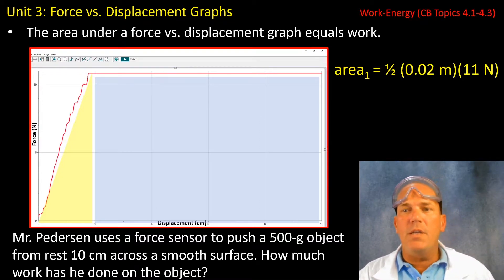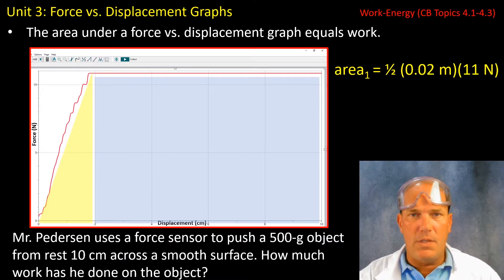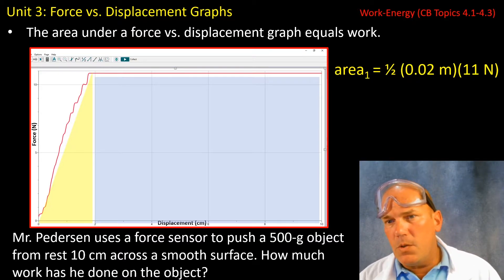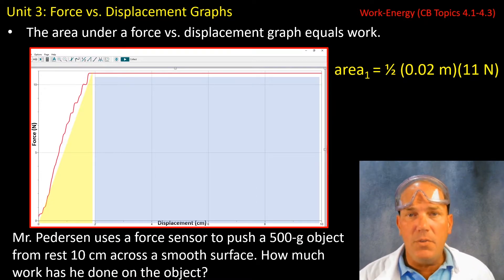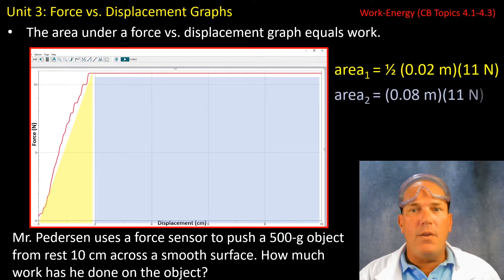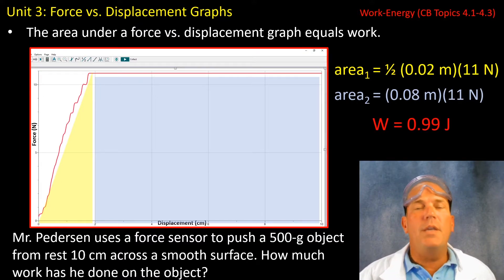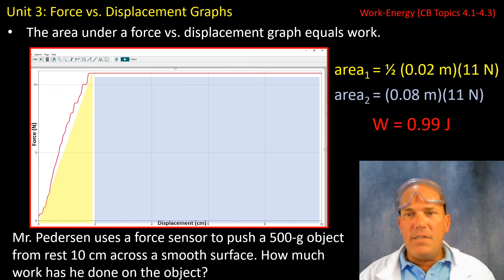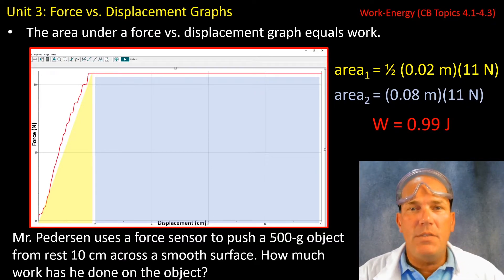So our first area we can approximate using the one half base times height to be one half 0.02 meters. Now I converted centimeters into meters. So I was in the base SI units and about 11 newtons of force. For the remaining area, the rectangle, we have 0.08 meters again multiplied by 11 newtons. So this is going to give us the work. If we take area one and add it to area two, we get the approximate work that I am doing on this object.